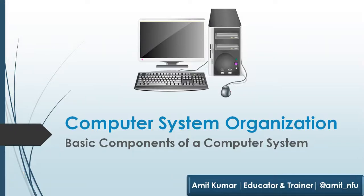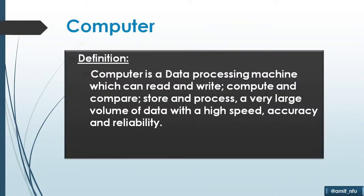Hello everyone, today we are going to learn about the basic components of our computer system and computer system organization. To begin with, we should first understand by definition what is a computer. Computer is a data processing machine which can read and write, compute and compare, store and process a very large volume of data with high speed, accuracy and reliability.